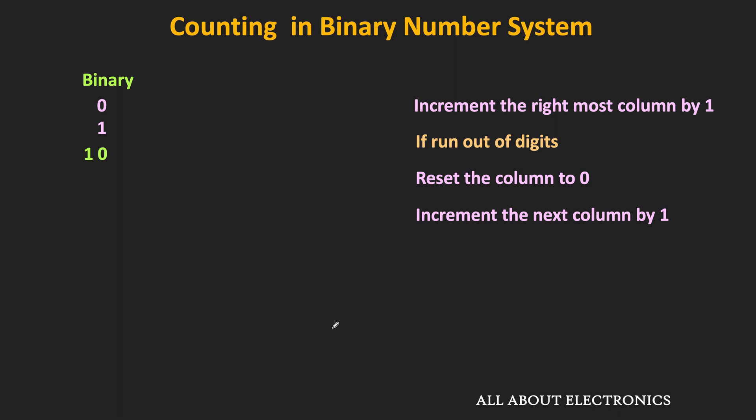Once again, we go to the first step and increment the rightmost column by 1, while all other remaining columns carry forward as they are. That means the next number is 11. Now, if you see the rightmost column, it is already run out of digits. So we reset it to 0 and increment the next column. But that next column is also run out of digits, so we reset it to 0 and increment the next column. Therefore in the binary number system, the next number is 100.